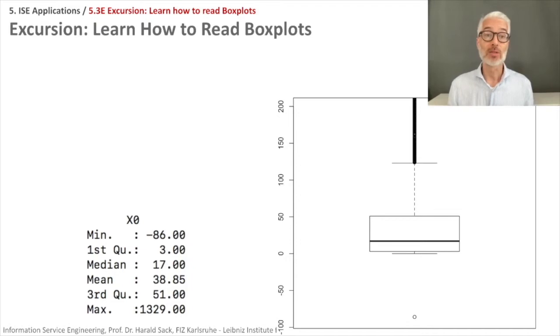So what you see here, the summary on the left side is what you have. You have a minimum, a maximum, you have a median and a first and third quartile. And sometimes you also have the mean given somewhere.